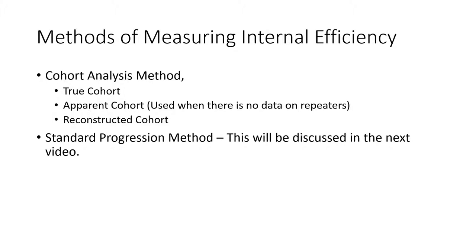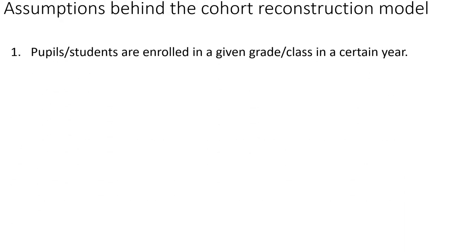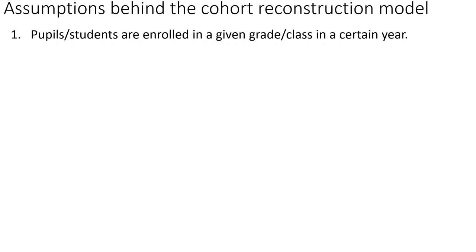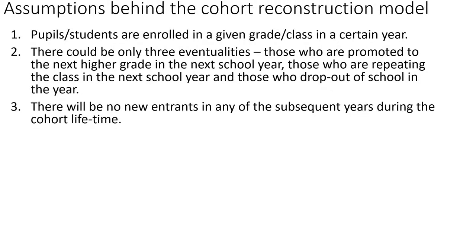The last method for measuring internal efficiency is the standard progression method, which will be discussed in the next video. Now, the cohort reconstruction model has certain assumptions. First, students are enrolled in a given grade in a certain year — they must all enter at the same time. Second, there are only three possible eventualities for any student: they are promoted, they are repeating, or they drop out. Third, there will be no new entrants joining the cohort in any subsequent year.